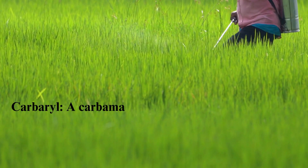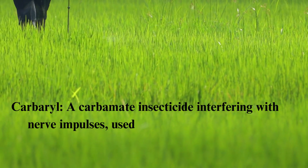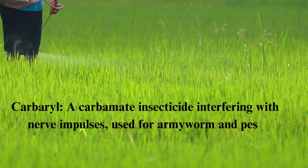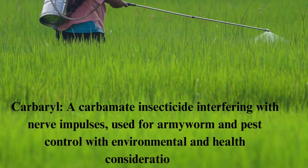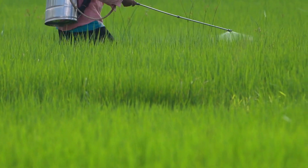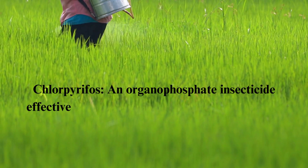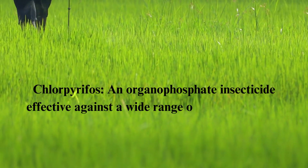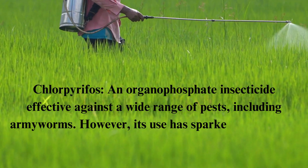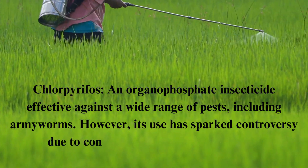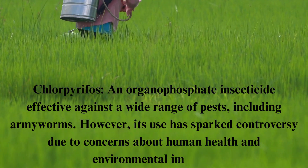Carbaryl is a carbamate insecticide that interferes with the transmission of nerve impulses in insects. It is used for controlling armyworms and other pests, but may have environmental and health considerations. Chlorpyrifos is an organophosphate insecticide that targets the nervous system of insects and is used for controlling a wide range of pests, including armyworms. However, its use has become controversial due to concerns about its impact on human health and the environment.